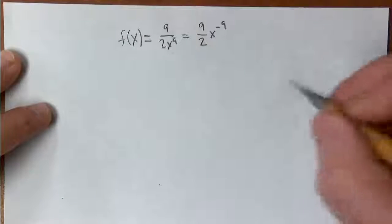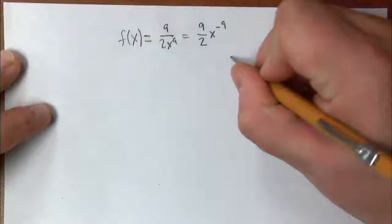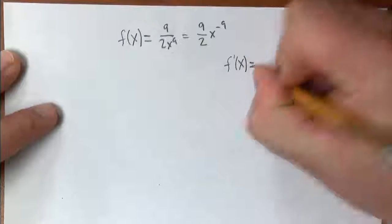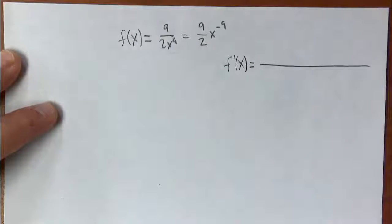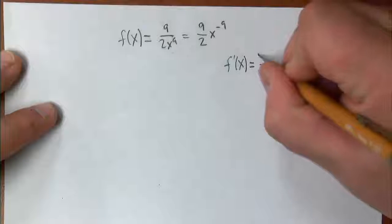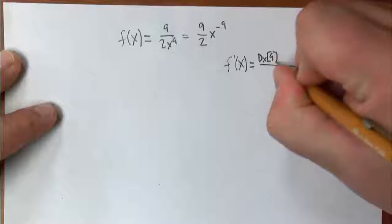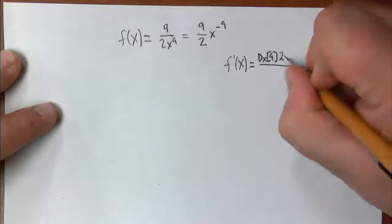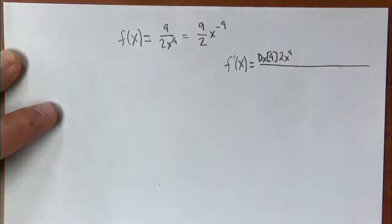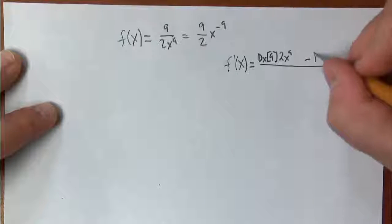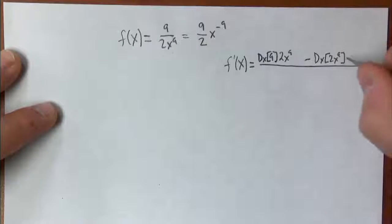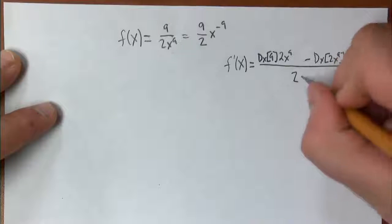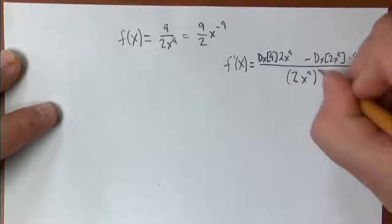Let's do the quotient rule first. The quotient rule says that f prime of x will be equal to a quotient of several things. It's the derivative of the top times the bottom function, 2x to the 9th, minus the bottom function times the derivative of the top, all over the bottom function squared.